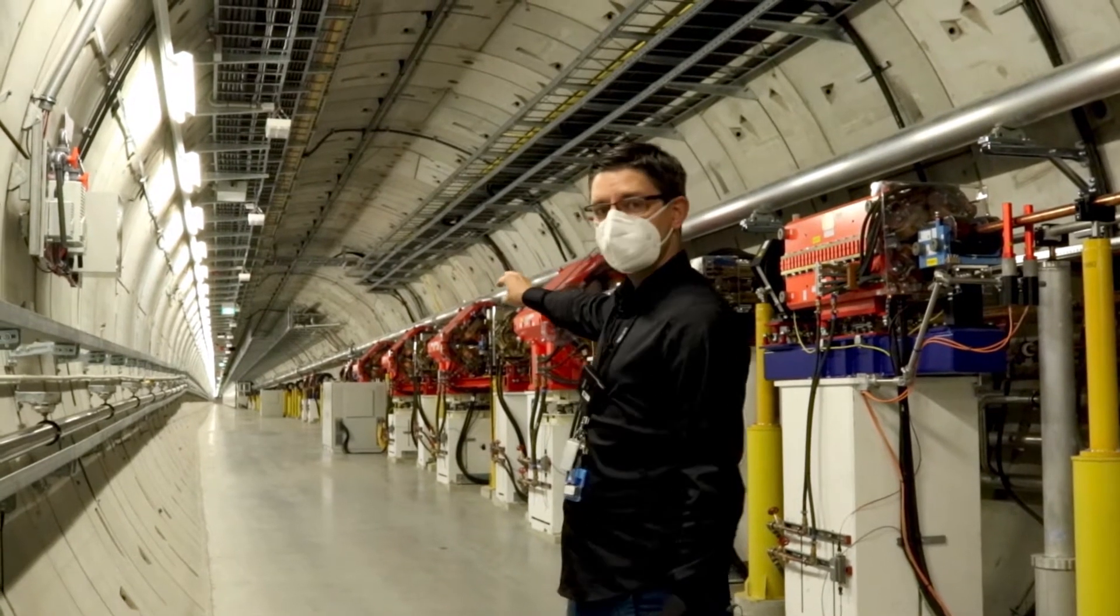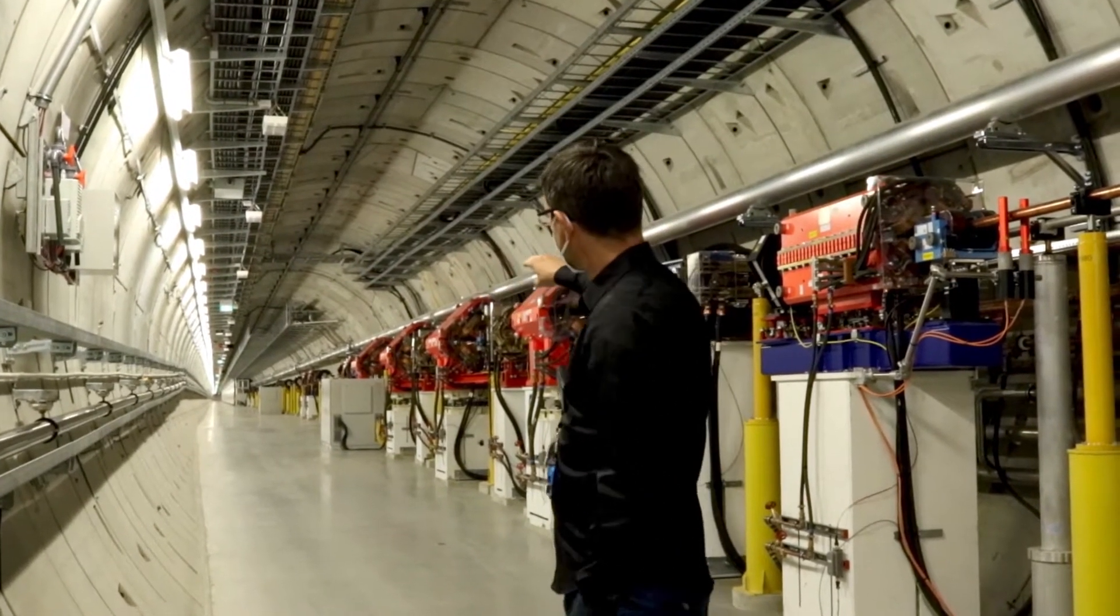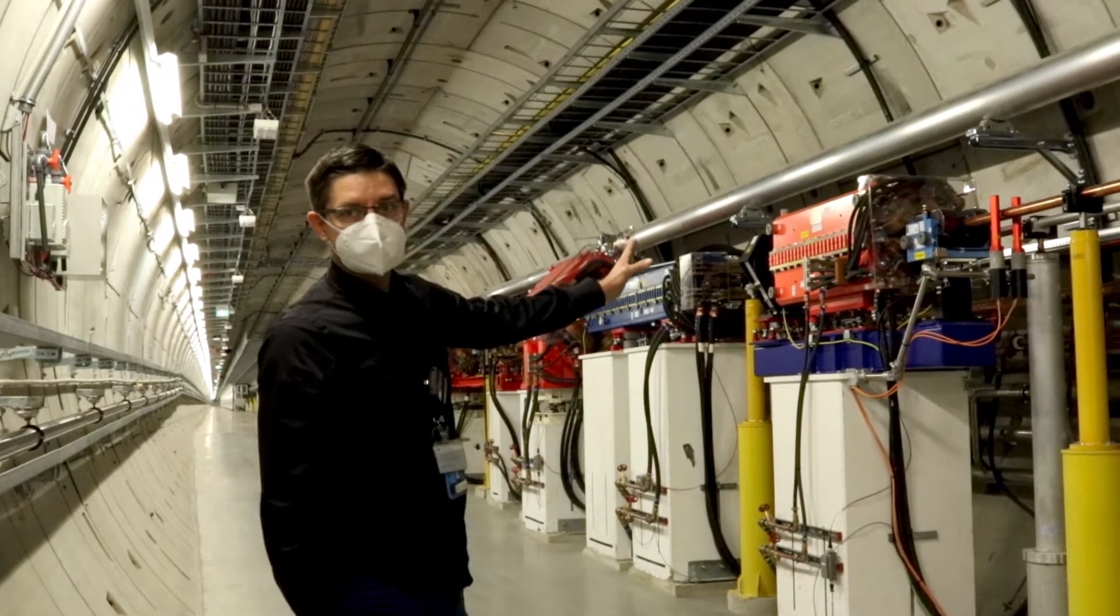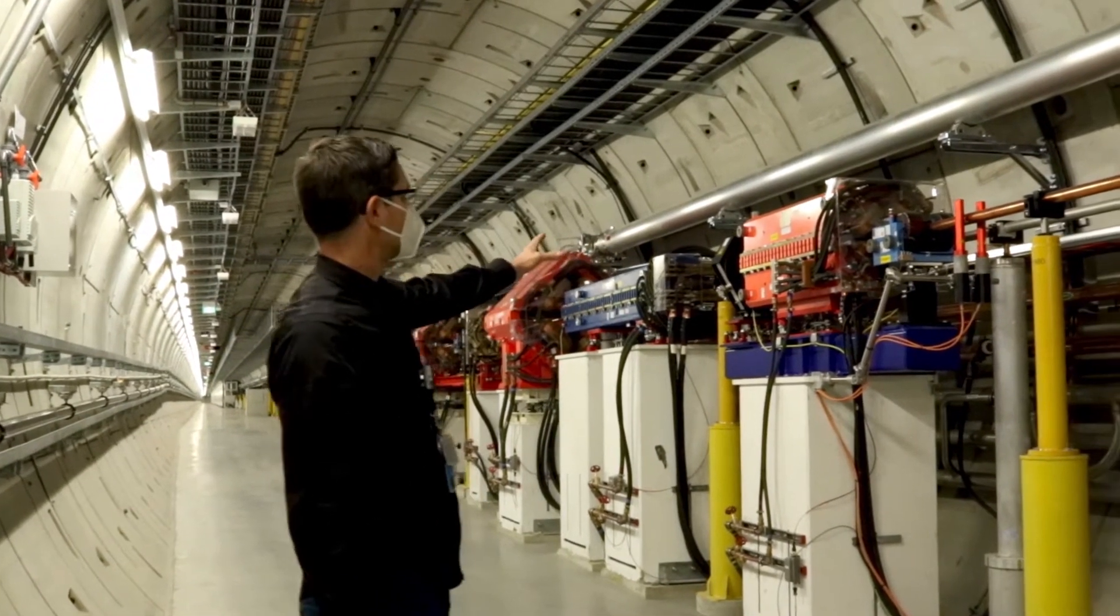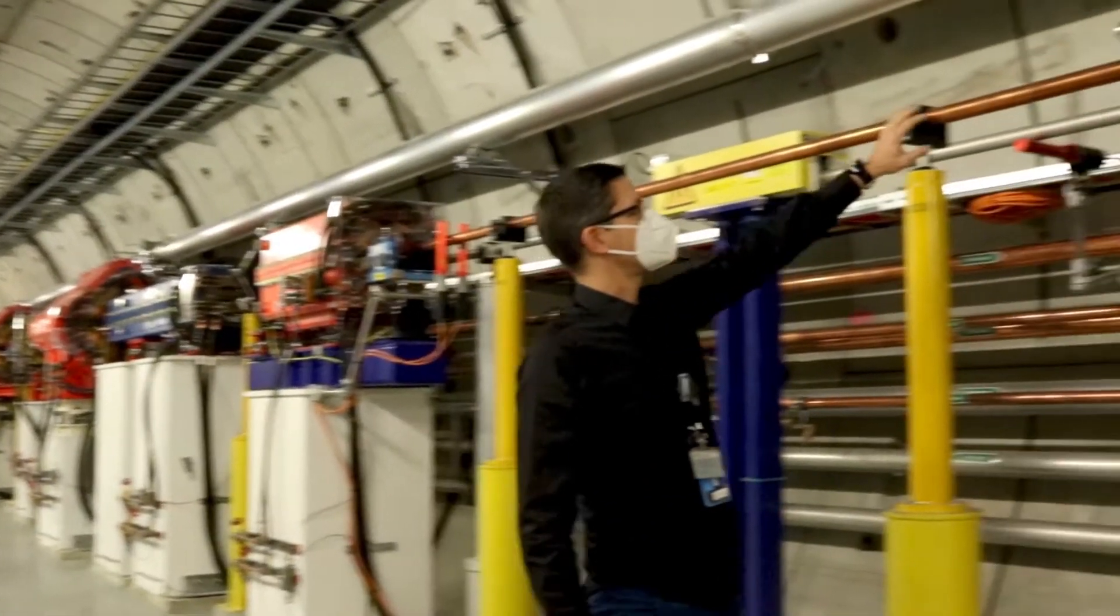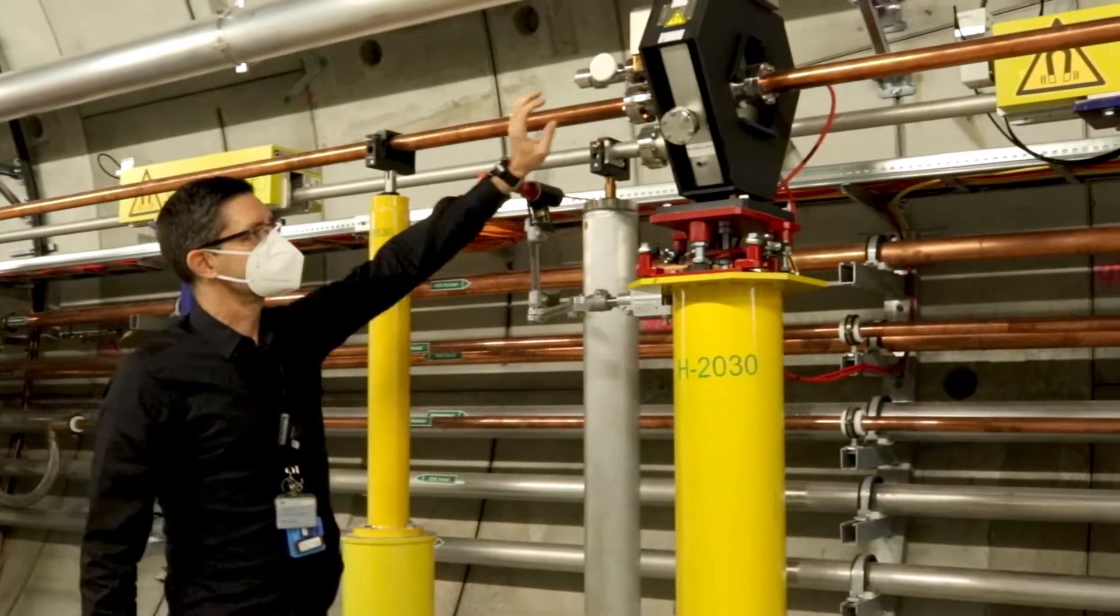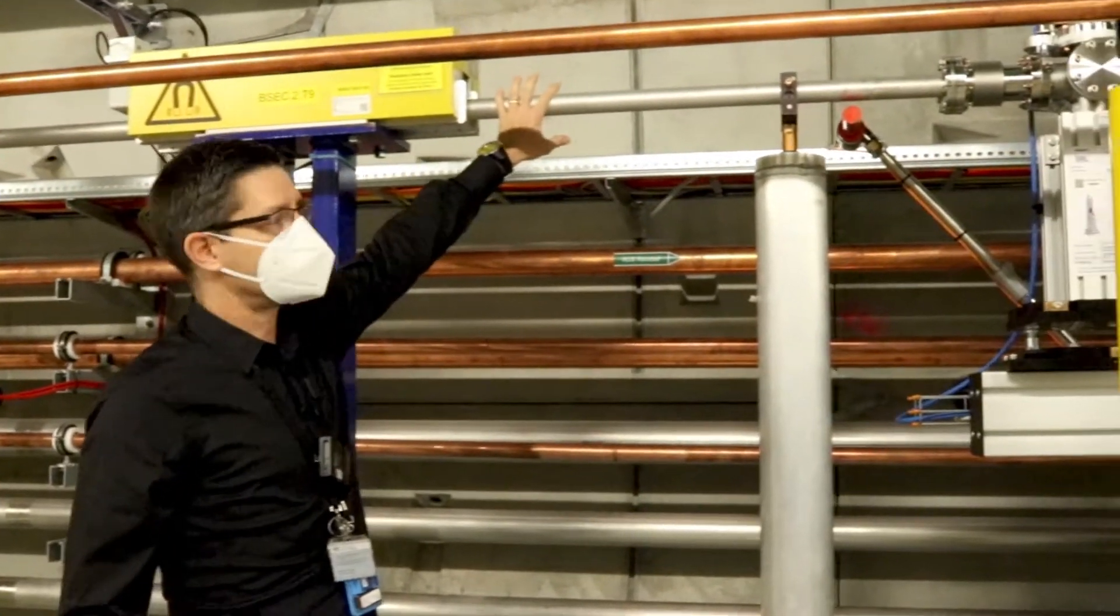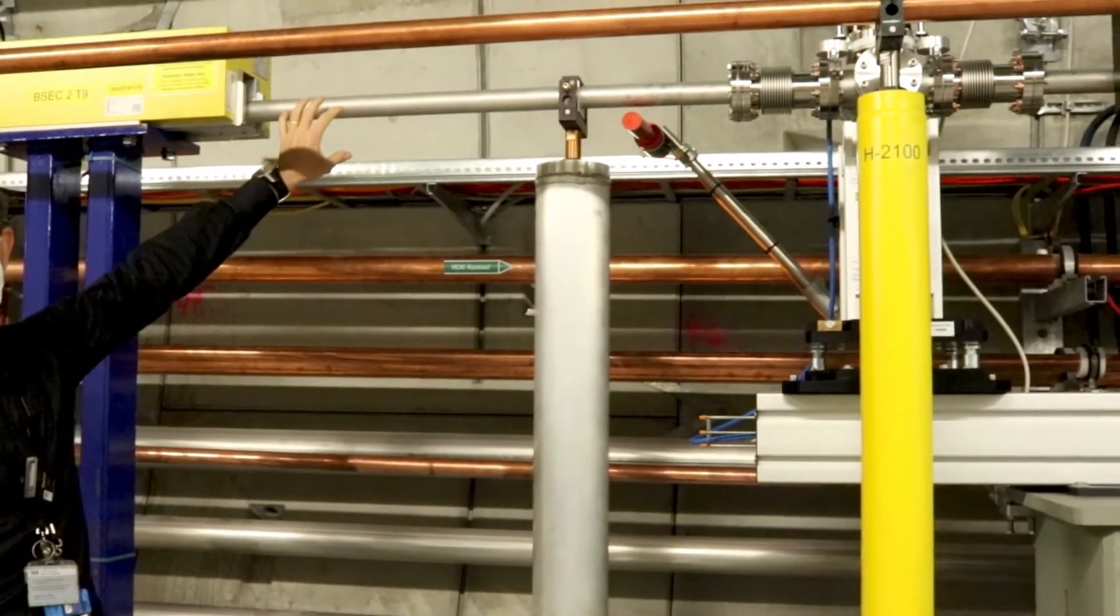The photons and electrons travel together until this point where you see these magnets. These magnets divert the electrons to the right-hand side into a copper tube. This tube contains only the electrons, and the photons, the X-rays, are here in the silvery tube.